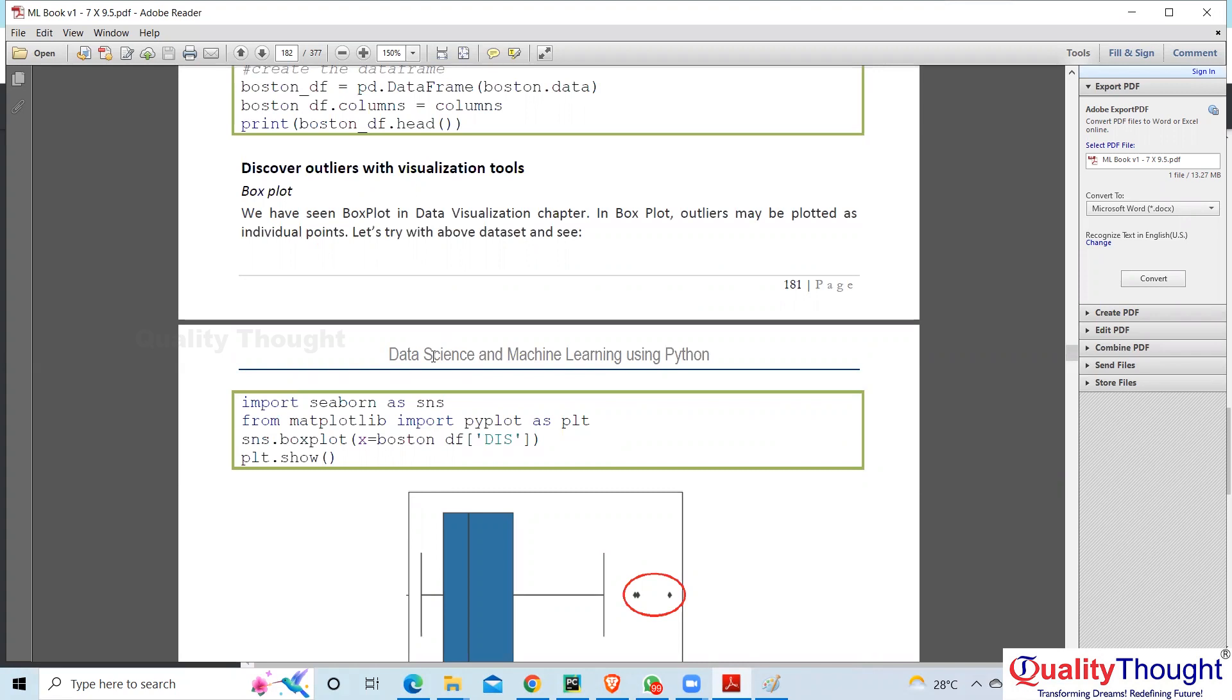Then you can actually remove them or treat them just like your missing values, right? Outliers may not be able to perform or it will have again biased results. So you can replace outlier just like you would replace a missing value.